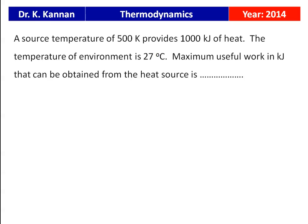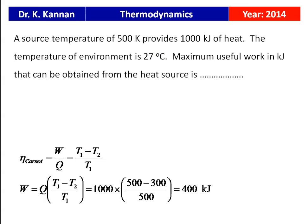From the 2014 question paper: a source at 500 K provides 1000 kJ of heat; environment temperature is 27°C (300 K). Maximum useful work from the Carnot cycle: W = Q × (T1 − T2) / T1 = 1000 × (500 − 300) / 500 = 400 kJ. The answer is 400 kJ.